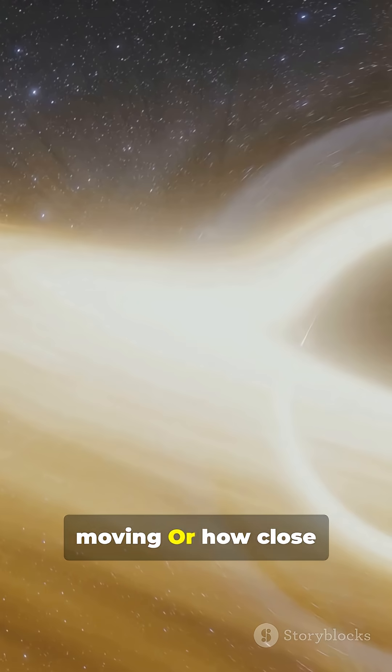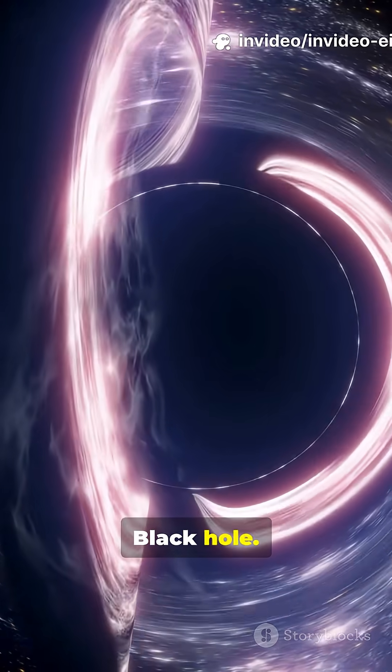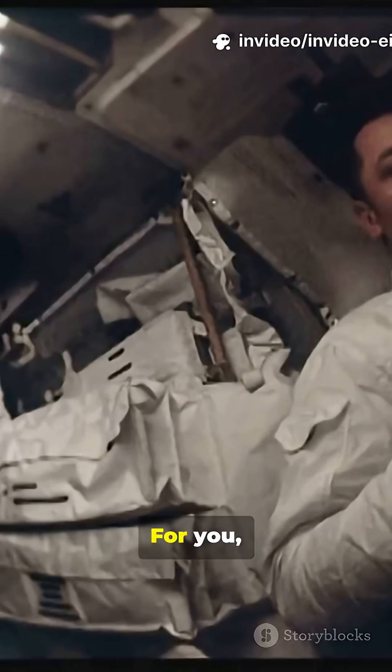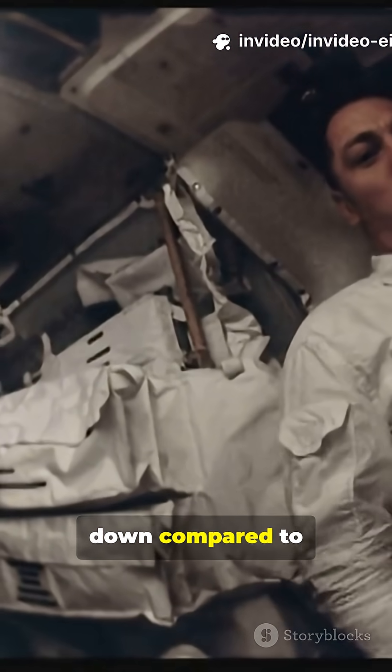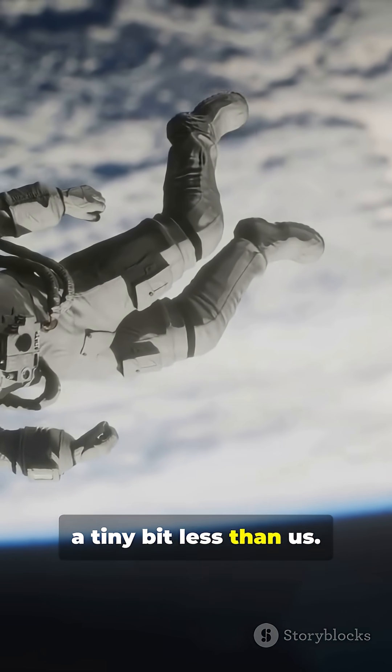All depending on how fast you're moving or how close you are to something super heavy. Planet, black hole. Imagine you're in a spaceship zooming close to the speed of light. For you, time would slow down compared to someone back on Earth. That's why astronauts age just a tiny bit less than us.